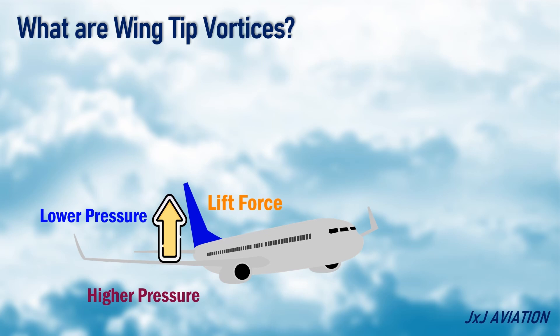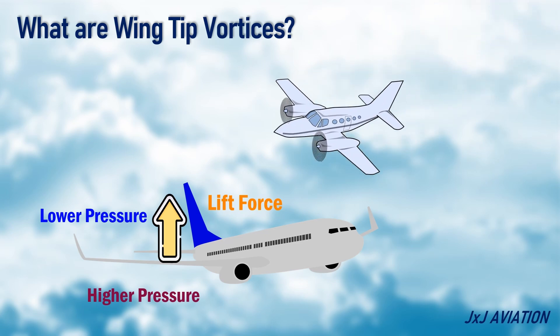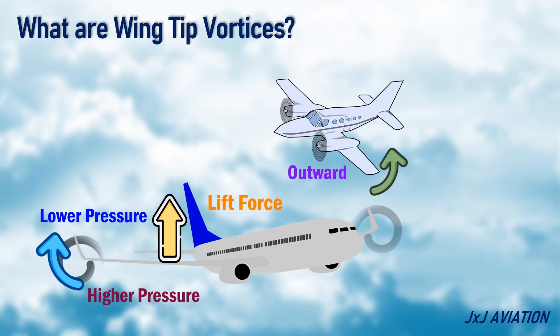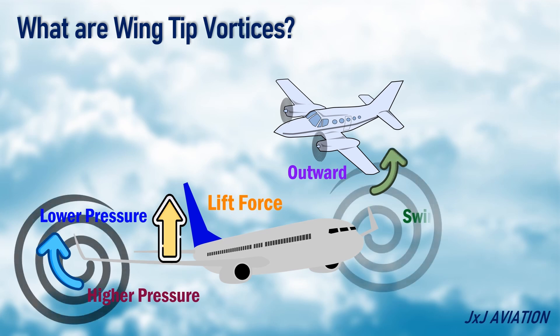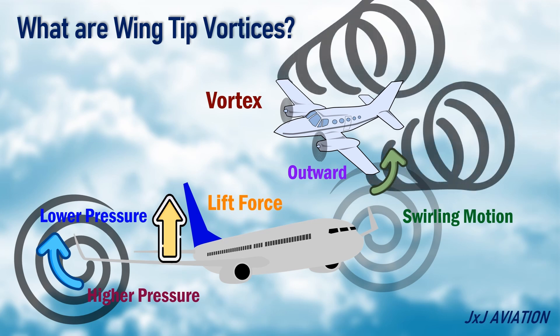At the wingtips, the high pressure air flows outward over the tips and creates a swirling motion. This motion is called a vortex. It is created on both the wingtips and is called wingtip vortices.